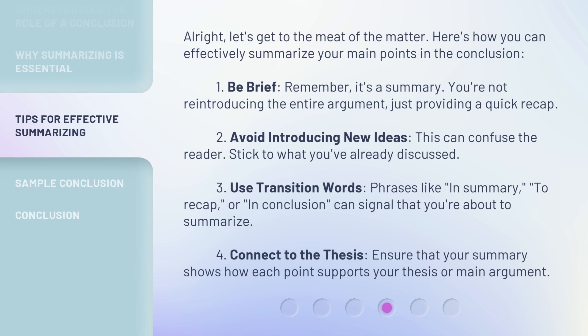Here's how you can effectively summarize your main points in the conclusion. One: be brief. Remember, it's a summary — you're not reintroducing the entire argument, just providing a quick recap. Two: avoid introducing new ideas, as this can confuse the reader. Stick to what you've already discussed. Three: use transition words. Phrases like 'in summary,' 'to recap,' or 'in conclusion' can signal that you're about to summarize. Four: connect to the thesis — ensure that your summary shows how each point supports your thesis or main argument.